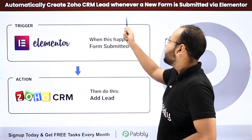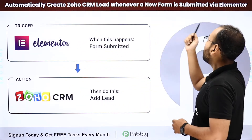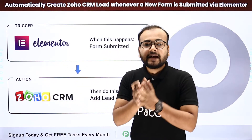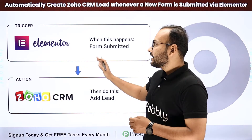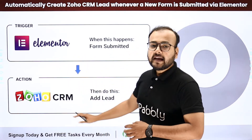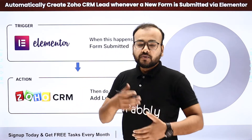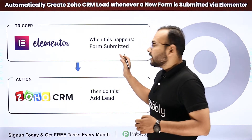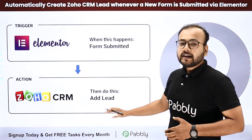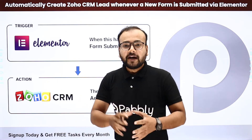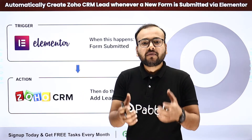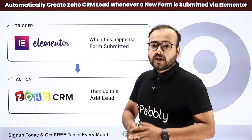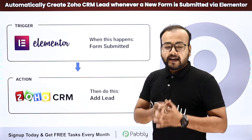The next automation is to automatically create a Zoho CRM lead whenever a new form is submitted via Elementor. Here we are using the Elementor plugin of WordPress to create a signup kind of form, connected in the trigger, and Zoho CRM in the action application. If you are taking signups using forms, you can use this automation — as and when any of your leads sign up using this form, the same lead will be created and added in your Zoho CRM automatically. You do not have to manually churn out the data of your subscribers, and it will save an enormous amount of your time and energy.